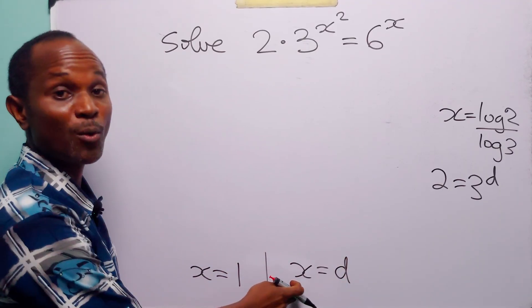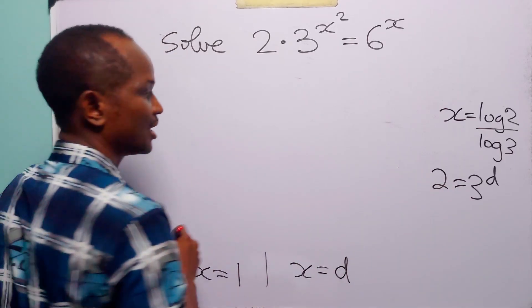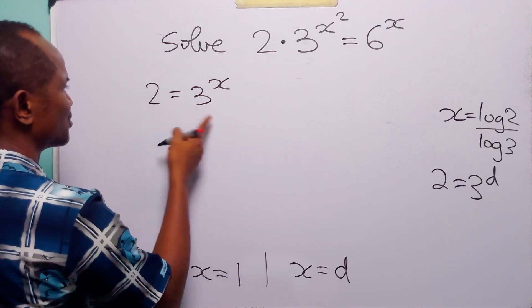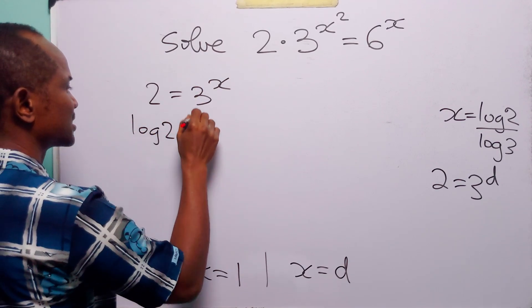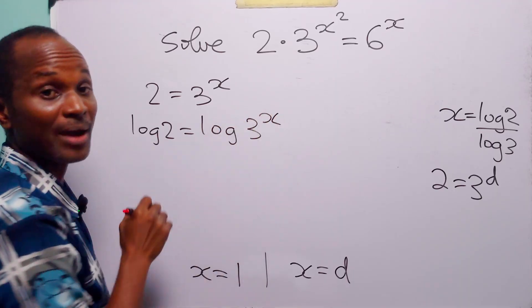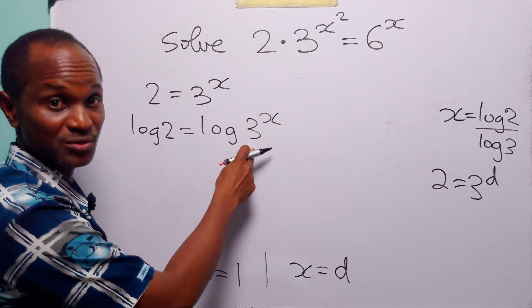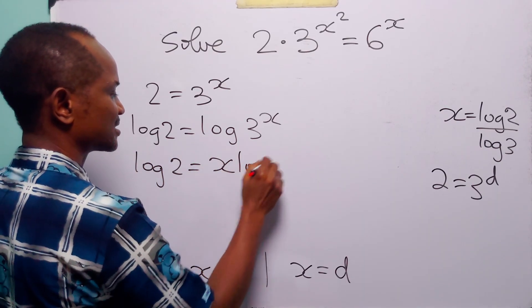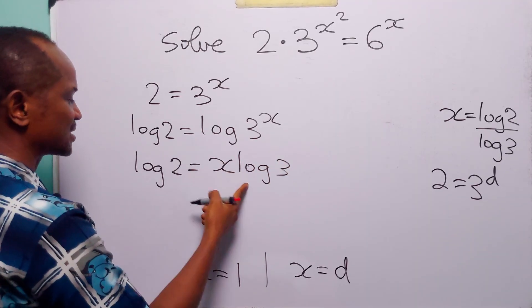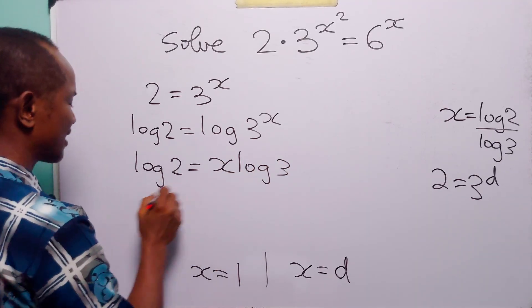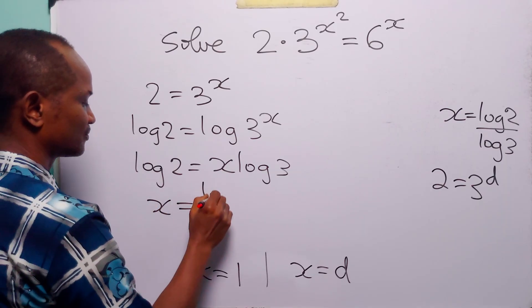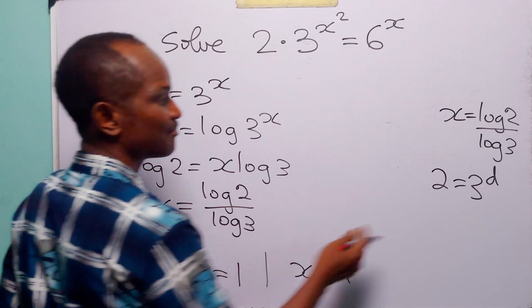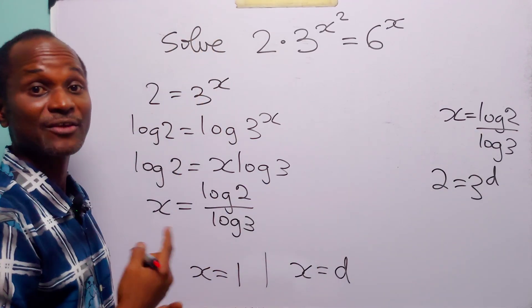Having found d to be equal to x, we come back to the substitution. We have that 2 is equal to 3 to the power x. Taking log of both sides, log 2 is equal to log 3 to the power x. Applying the power rule to the right-hand side, log 2 is equal to x times log 3. Dividing both sides by log 3, we have x equals log 2 over log 3 — exactly the same value found using the first method.